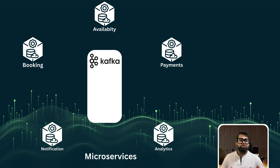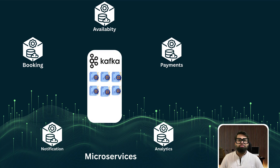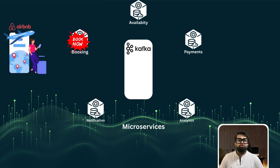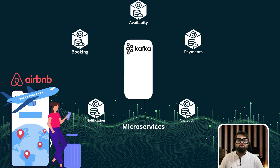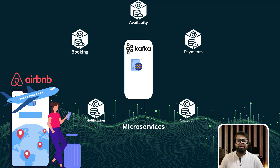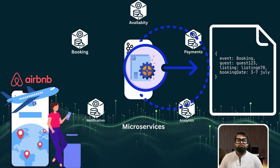Kafka sits in the middle of your system — a powerful distributed event streaming platform that receives data from one service, stores it reliably, and allows other services to pick it up when they are ready. So now, when a booking happens, the booking service doesn't need to wait for payment, messages, analytics, or availability updates. A guest just booked a listing in Paris. The booking service sends an event to Kafka — something like: 'A booking was made for guest 1-3, listing 7-8-9, from July 3rd to July 7th.' And that's it. It drops the message off and moves on to handle the next booking.